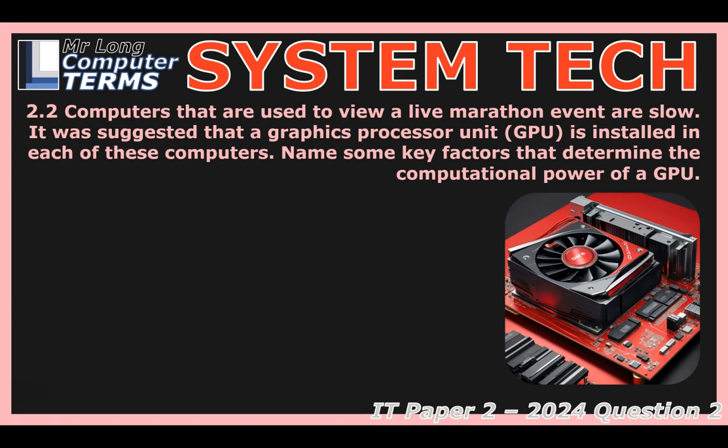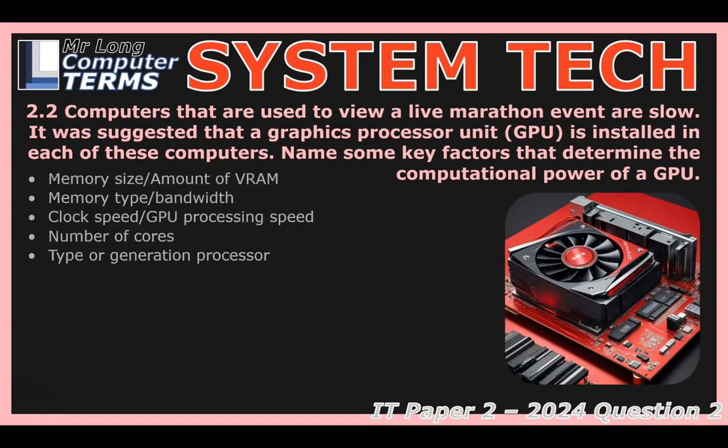A CPU might have four, eight, maybe 16 really powerful cores. A GPU has hundreds, often thousands, of smaller, very specialized cores. Think of it like building a house: a CPU is one super-skilled master builder doing everything precisely, while a GPU is like an army of workers, each specialized in one fast task — all working at the same time. For things like graphics, video editing, and AI, you need that massive parallel processing.